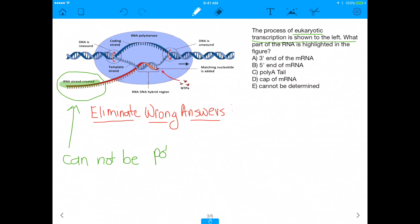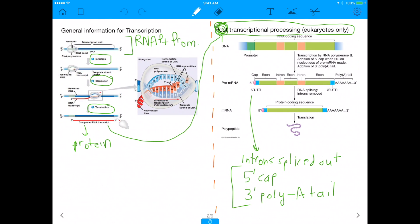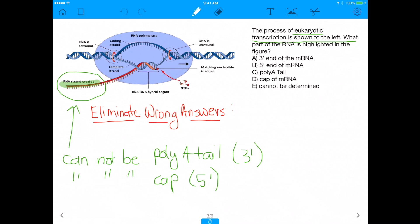It can't be the poly-A tail, and it also cannot be the cap, right? The only reason I said 5' was because the cap tends to be found on the 5' end, and the poly-A tail tends to be found on the 3' end. If you just go back here, you'll see that. See the 3' poly-A tail and the 5' cap. But regardless, the answer here cannot obviously be the poly-A tail or the cap, because we're talking about transcription, not post-transcriptional.